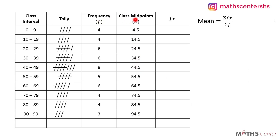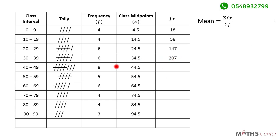We now have both the f values and the x values so we can find the fx values by multiplying them together. For the first one: 4 times 4.5 gives 18. Then 4 times 14.5 is 58. Then 6 times 24.5 is 147. Then 6 times 34.5 is 207. Then 8 times 44.5 is 356. Then 5 times 54.5 is 272.5. Then 6 times 64.5 is 387. Then 4 times 74.5 is 298. Then 4 times 84.5 is 338. And the last one, 3 times 94.5 is 283.5.